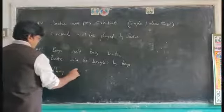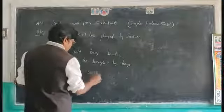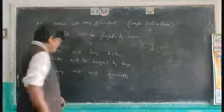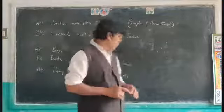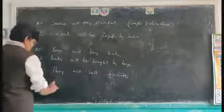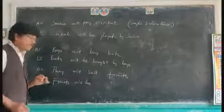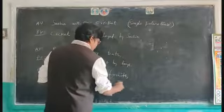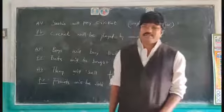Next active voice example: 'They will sell fruits.' The object is 'fruits.' In passive voice, 'they' becomes 'them.' So it becomes: 'Fruits will be sold by them.'